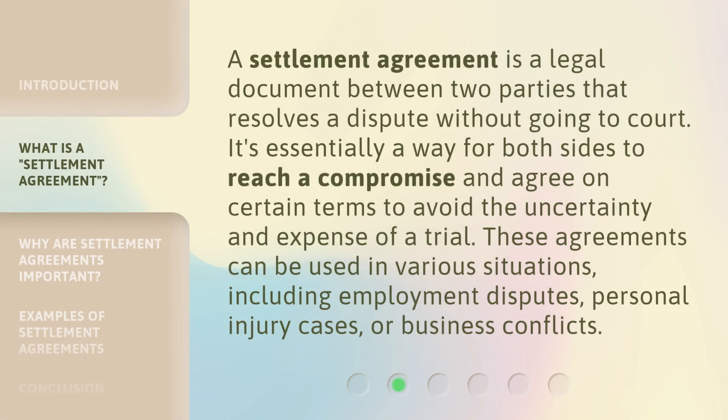A settlement agreement is a legal document between two parties that resolves a dispute without going to court. It's essentially a way for both sides to reach a compromise and agree on certain terms to avoid the uncertainty and expense of a trial. These agreements can be used in various situations, including employment disputes, personal injury cases, or business conflicts.